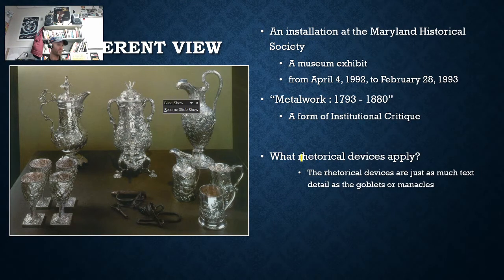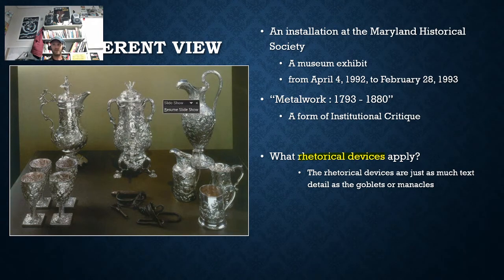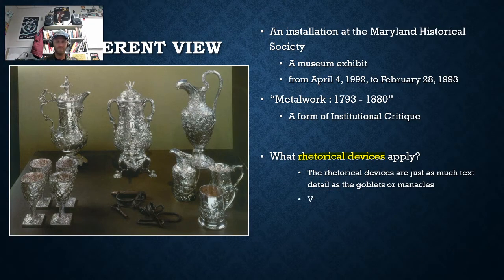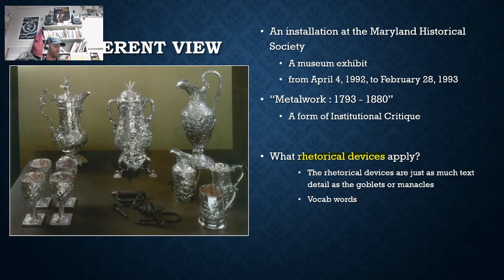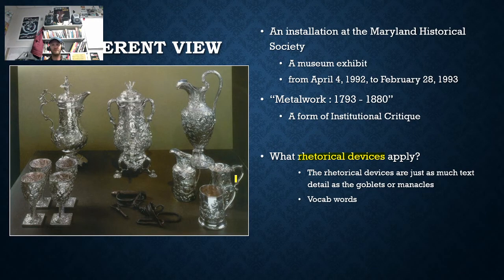What sort of rhetorical devices could we use? Those are the vocab words. Things like juxtaposition, things like contrast, symbol — those are all things that can be helpful in explaining what is the purpose behind this, why this thing exists.